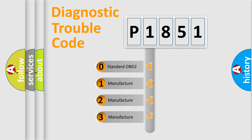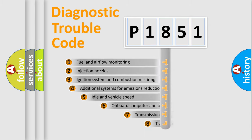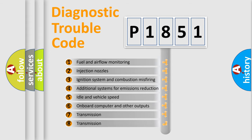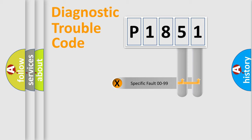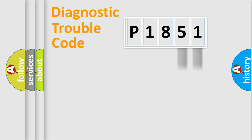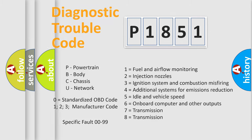If the second character is expressed as zero, it is a standardized error. In the case of numbers 1, 2, or 3, it is a more manufacturer-specific expression of a car-specific error. The third character specifies a subset of errors. This distribution is valid only for the standardized DTC code, where only the last two characters define the specific fault of the group.